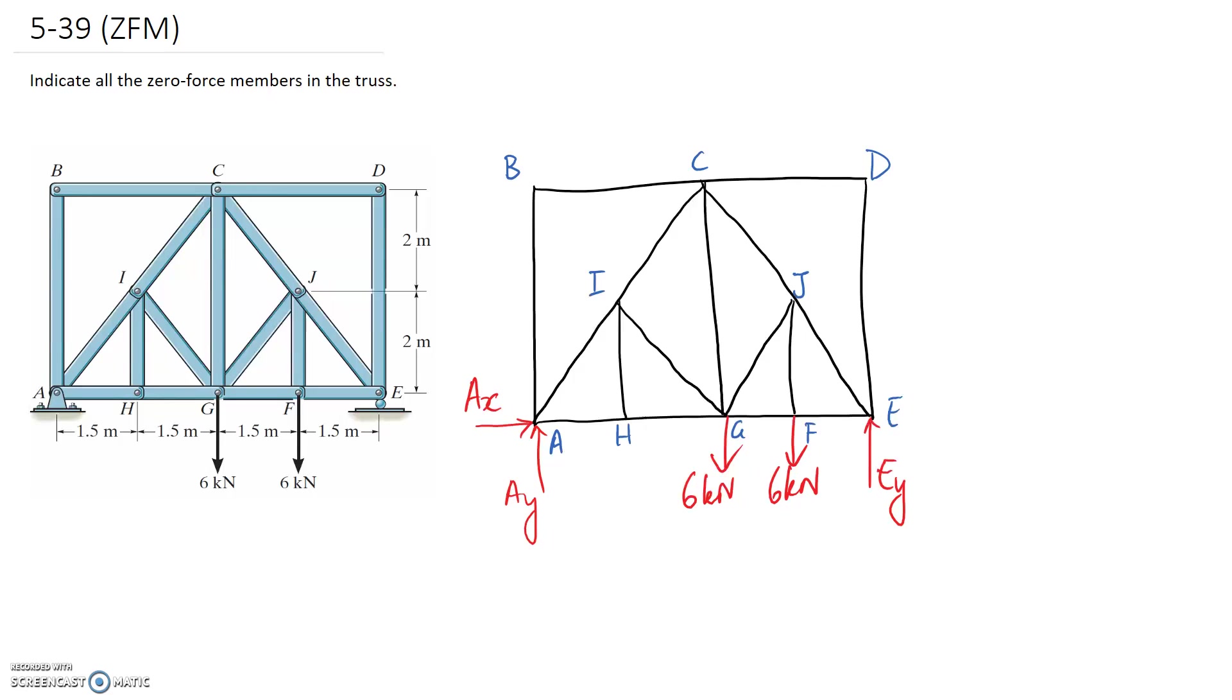Alright, so the first rule that I mentioned was we need to look for instances where we have two members coming together and no externally applied forces because both of the members that come together are going to be zero force. So looking at this diagram that we have, we can see that node B here is going to be an example of that. We have two members coming together, we have no externally applied forces, none of these red forces are applied there. So that means that both of these are going to be zero force members.